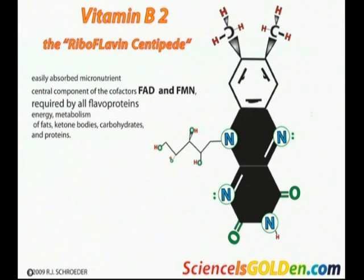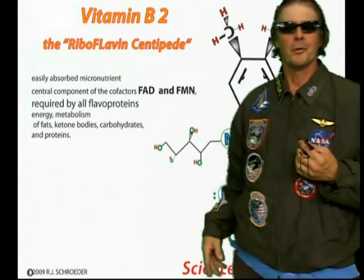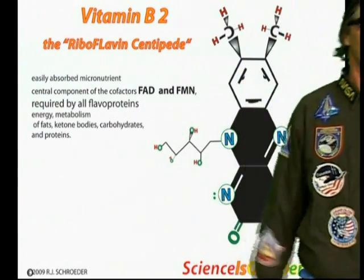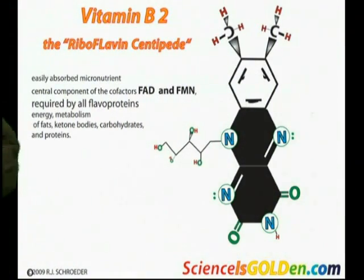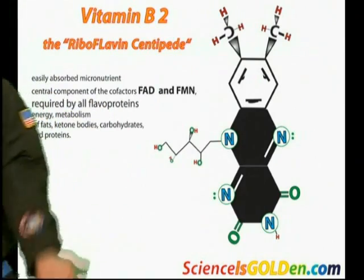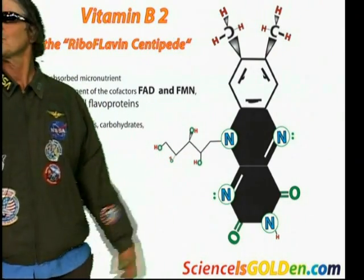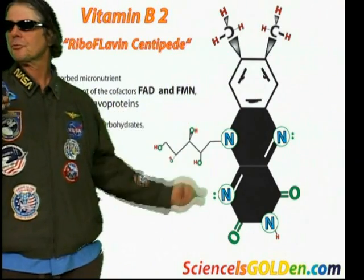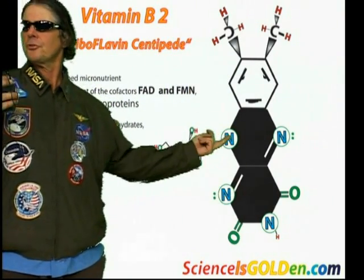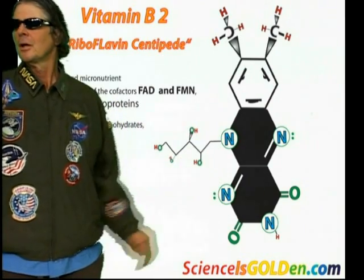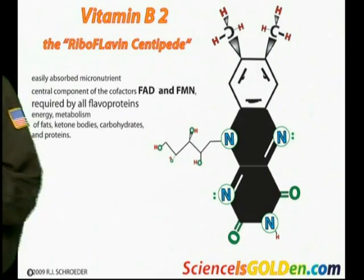Vitamin B2, riboflavin — we're going to call it the riboflavin centipede. This is a cofactor in other molecules: enzymes, vitamins, hormones, stuff like that. When you see the three-ring structure centipede here, two nitrogens in these rings, there are flavins that you're going to find.